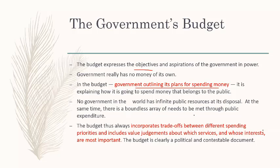At the same time, there is a boundless array of needs to be met through public expenditure. No country in the world, even the USA, has unlimited resources. Most of these countries have a deficit. The budget incorporates trade-offs between different spending priorities and includes value judgments about which services and whose interests are most important. The budget is clearly a political and constitutional document — the government tries to do its best to enhance society, improve the economy, and provide services of ultimate priority. The budget represents the action plan for the government.